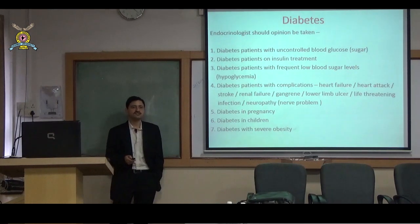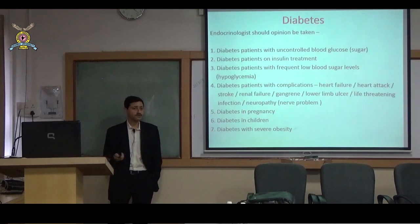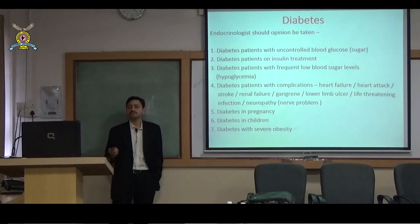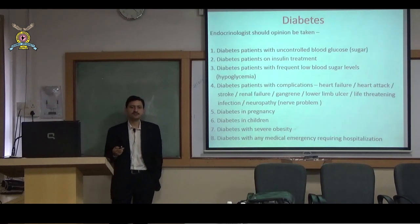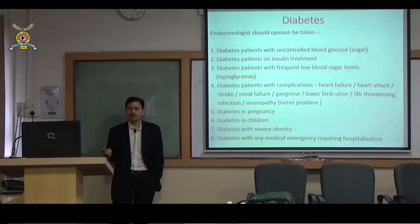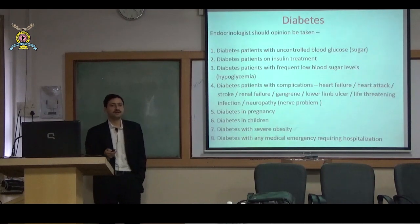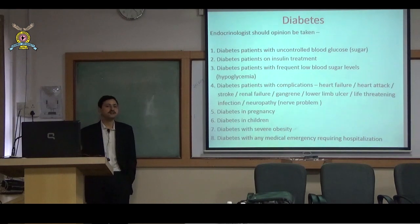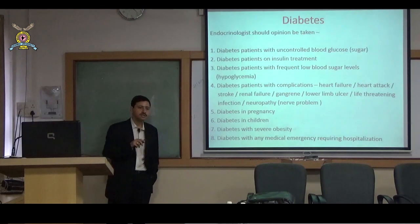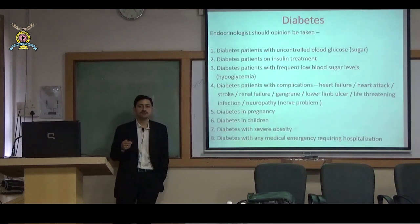Diabetes with severe obesity involves very severe insulin resistance where patients require more than 200–300 units per day — how to give insulin and how to space out dosing needs to be handled by an endocrinologist. Diabetes with any medical emergency requiring hospitalization — for example, a patient admitted for pneumonia who also has diabetes, or acute pancreatitis with diabetes — requires perioperative or hospitalization management with specific glycemic targets, whether medical or surgical emergency.